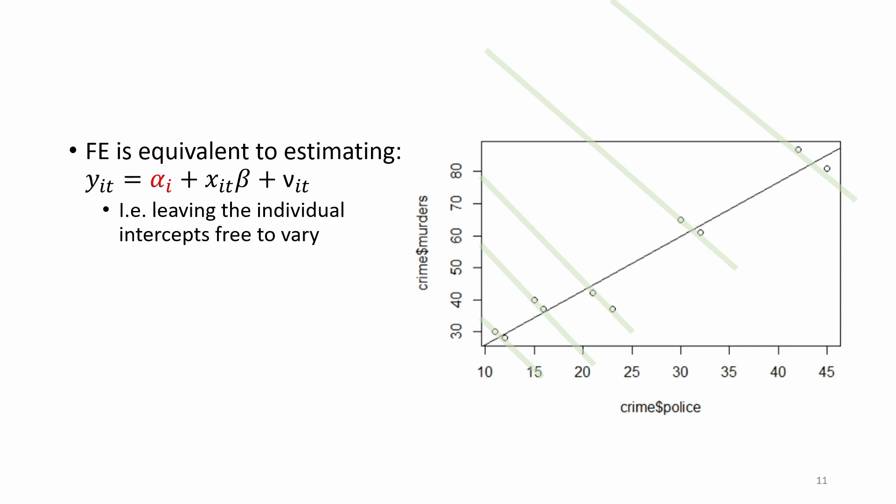We leave the individual intercepts, alpha indexed by i, to be free to vary across cities. In other words, the intercept for each city is considered to be a parameter of the regression model that we try to estimate.